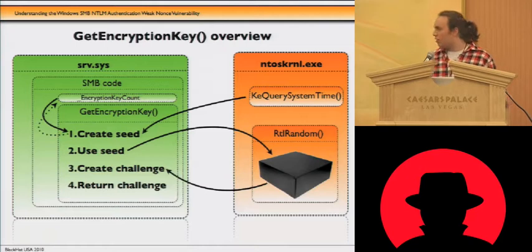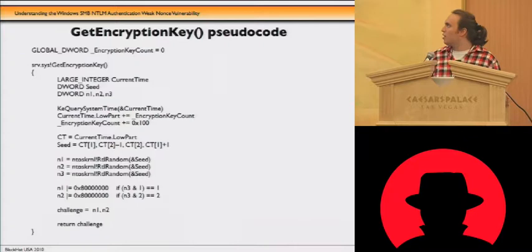This is the getEncryptionCode that we arrived at after disassembling the getEncryptionKey function, and it returns the challenge to its caller as a function.